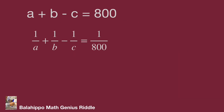We have two equations: a plus b minus c equal to 800, and 1 over a plus 1 over b minus 1 over c equal to 1 over 800. We may go for several approaches to find the result, but I notice the numbers 800 and 1 over 800 — if we multiply them together we get 1. This should be one of the approaches for this problem.